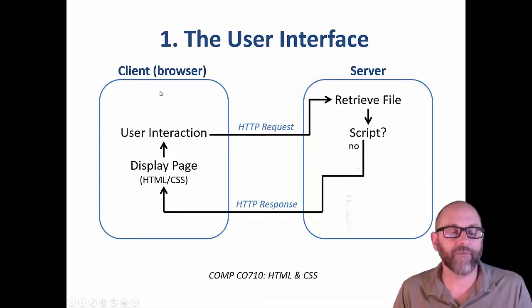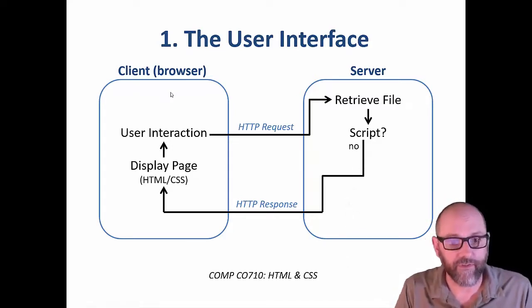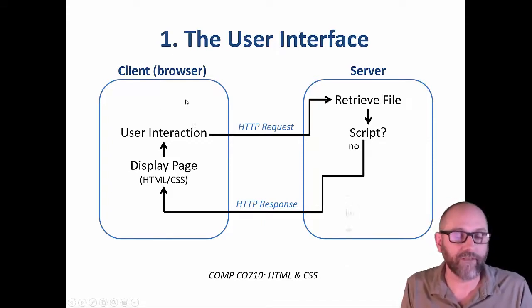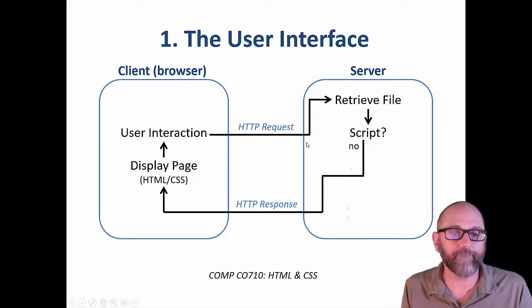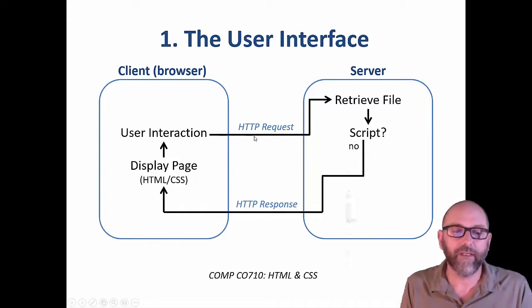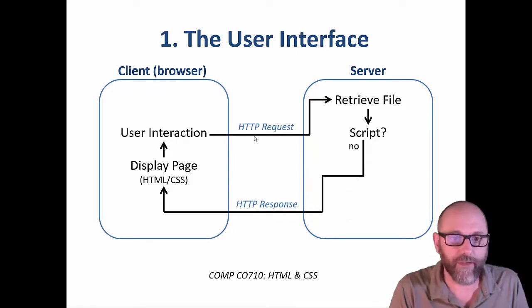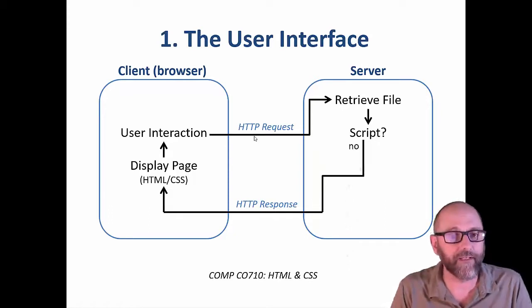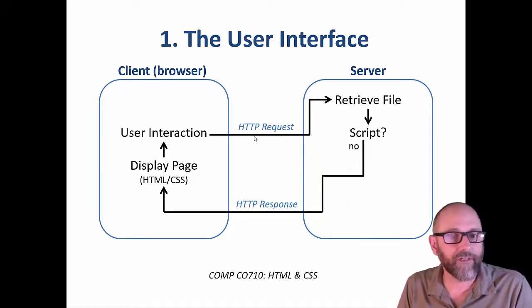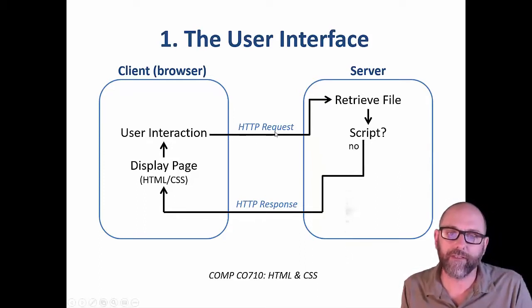The word 'client' in web app design sometimes refers to the computer the user is using, sometimes to the user themselves, and sometimes to the specific browser they're using — usually I'll mean browser. So over here we have Chrome running on the user's machine or Firefox or whatever, and over here we have a server far away, separated physically, connected through the internet. A user initiates an HTTP request — HTTP stands for Hypertext Transfer Protocol, which is explained in the Module 1 guide. A request is sent from the client, maybe by clicking a link or typing an address into the address bar. A request is always for a file.